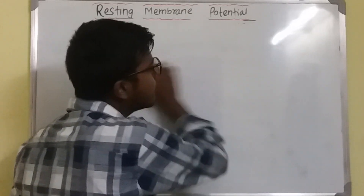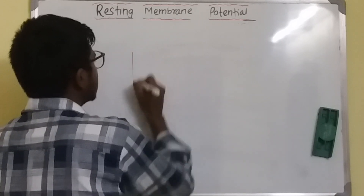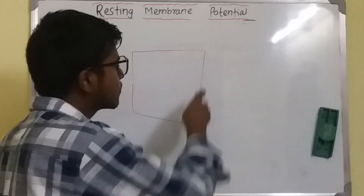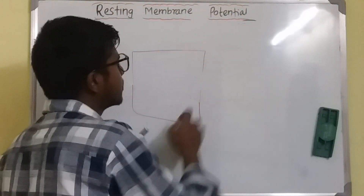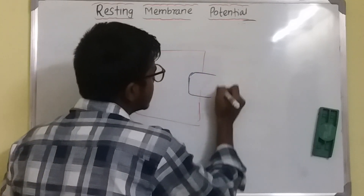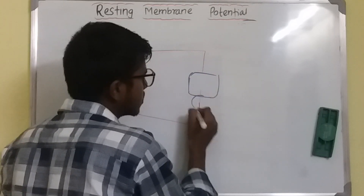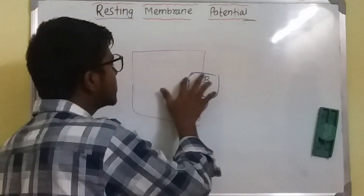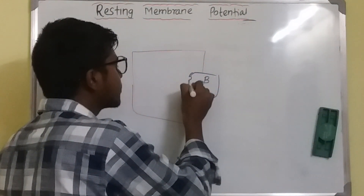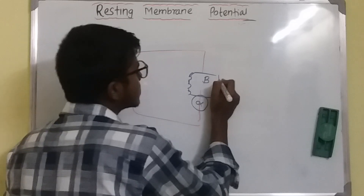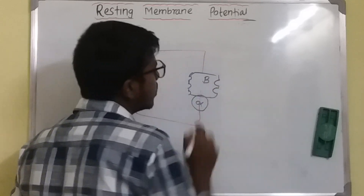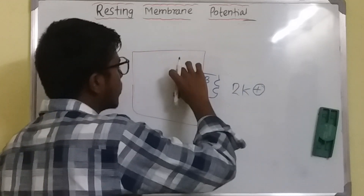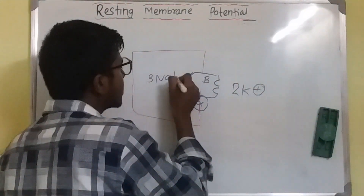In the membrane of any cell — the phospholipid cell membrane — it has an alpha subunit and a beta subunit. Inside the fiber, the beta subunit has three attaching domains, whereas on the outside it has two attaching domains. So from the outside it will pick up two potassium ions, whereas from the inside it will pick up three sodium ions.